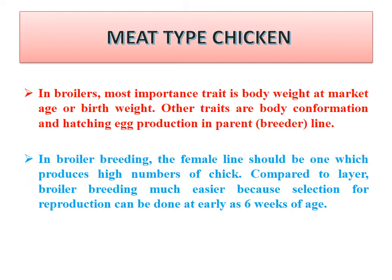Now we move to meat-type chickens, also called broilers. The most important trait in broiler production is body weight at market age. Broilers are raised for only six weeks until their body weight reaches 2 kg, at which point they are slaughtered for meat. It is desirable that this 2 kg market weight is reached as early as possible.